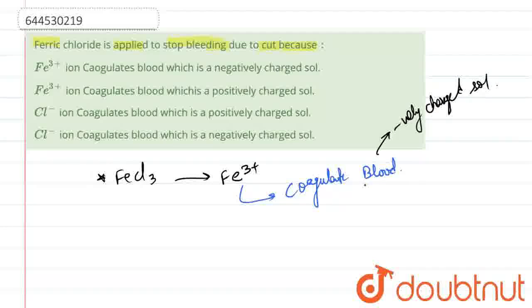So as we know that blood is a colloidal salt, so on rubbing the injured part with Fe3+, coagulation of blood takes place.